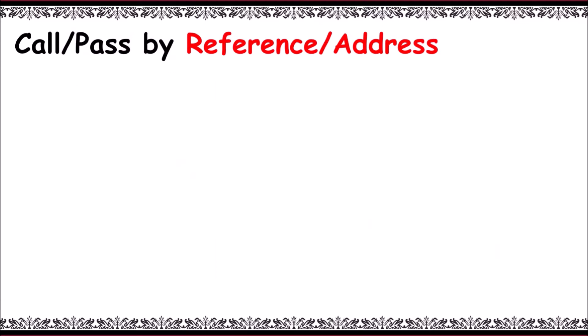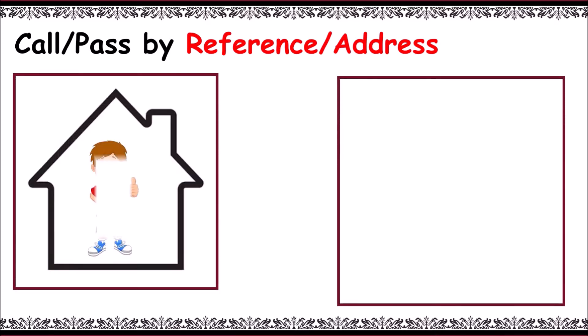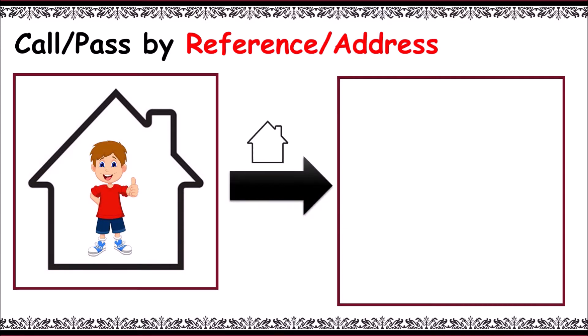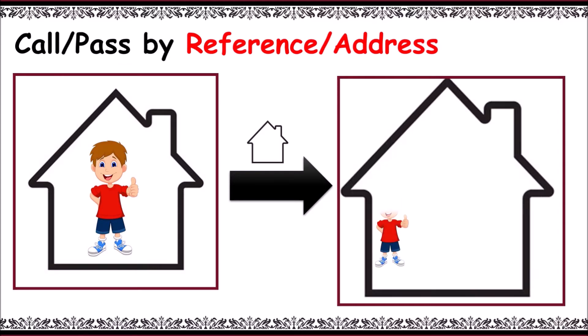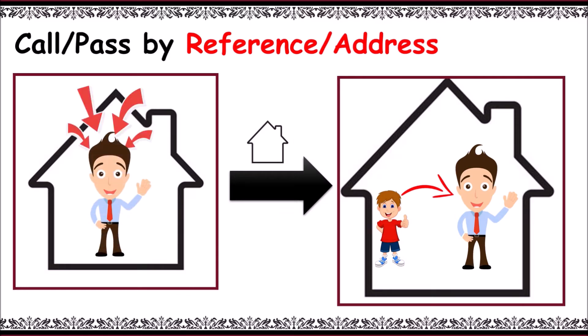Now, call by reference or address, also termed as pass by reference or address. Here also there are two functions. The first function contains a house and a boy in it. I want to send the house to another function. On sending the house, you can observe the boy is in that house. I want to modify the boy to man. After this, you can observe the house in the first function with the man in it.